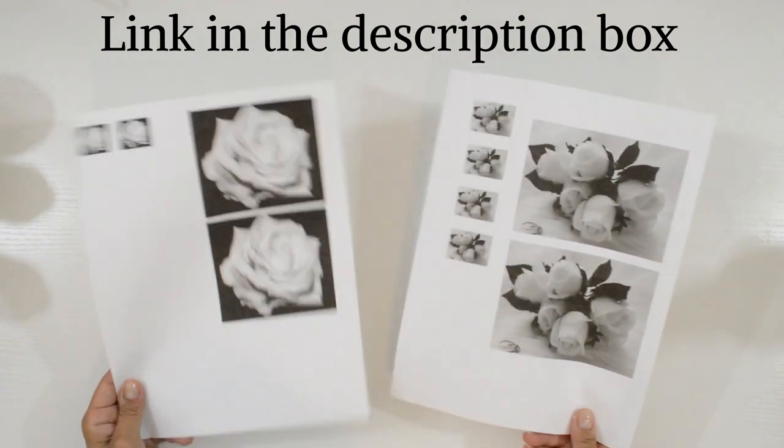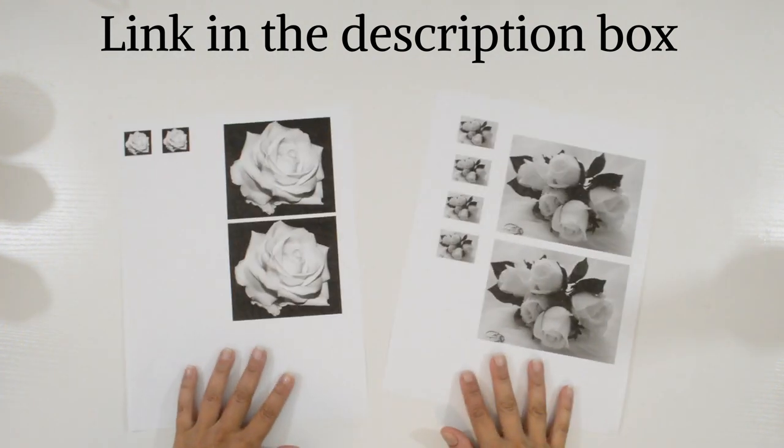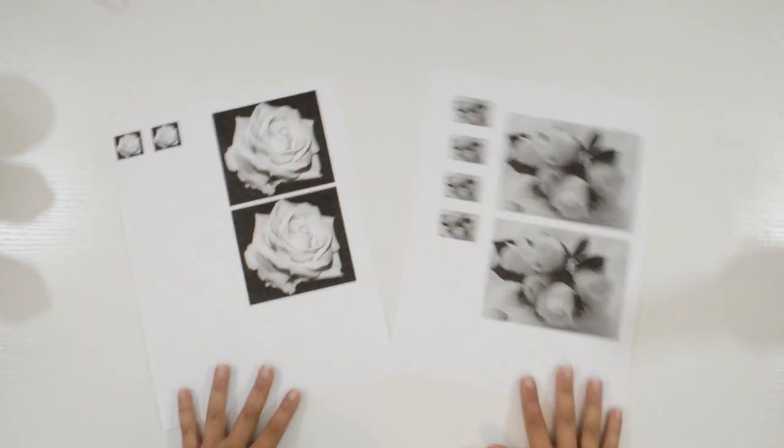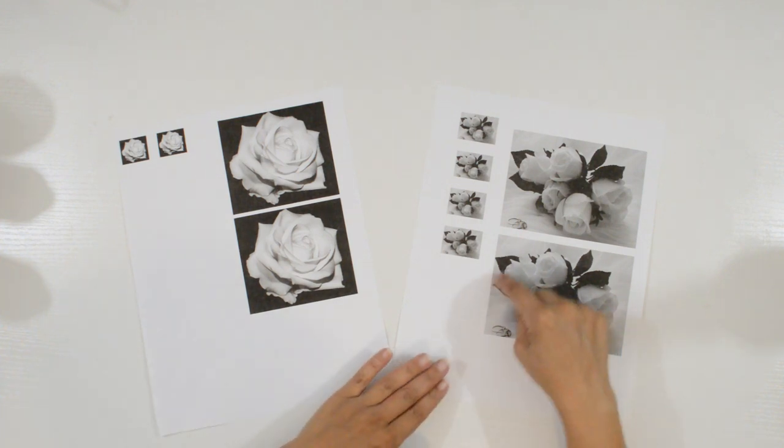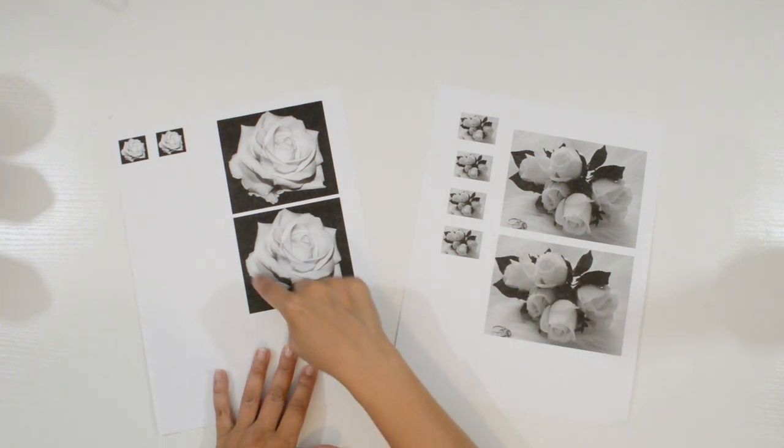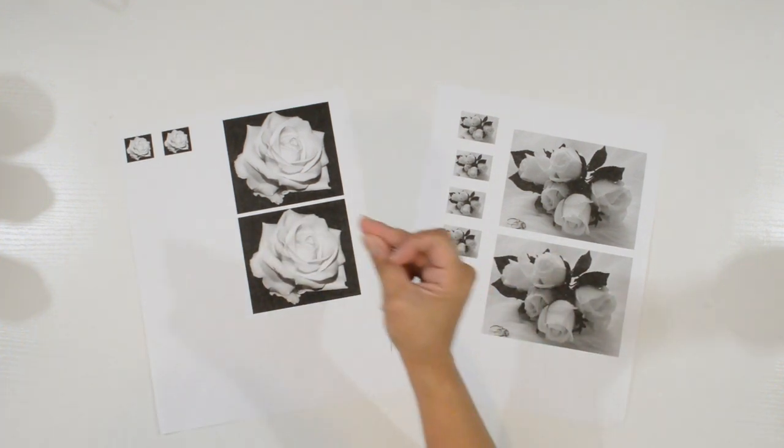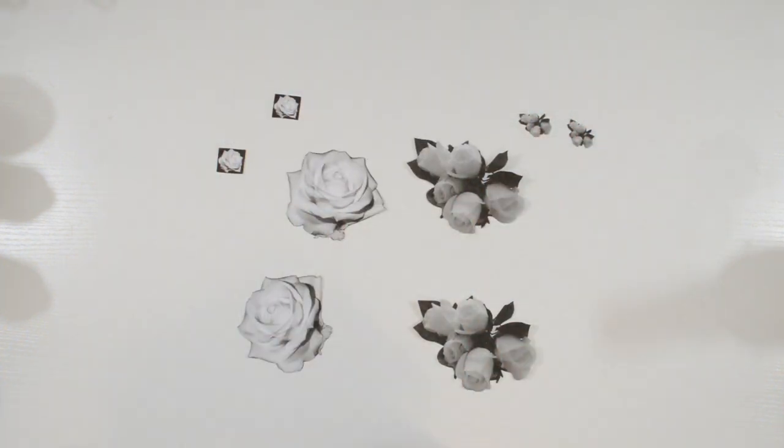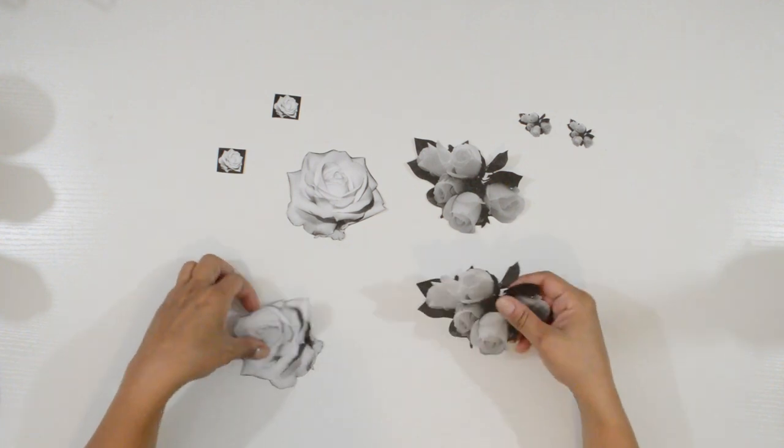One of the ways to be able to decoupage over a dark color is by using printouts. I designed a sheet with the assorted roses I wanted to use. I printed them out on my inkjet printer. Black and white pics from the inkjet printer don't seem to bleed when decoupaging. I can't say the same for colors. So if you want to use color, make sure to use a laser printer.